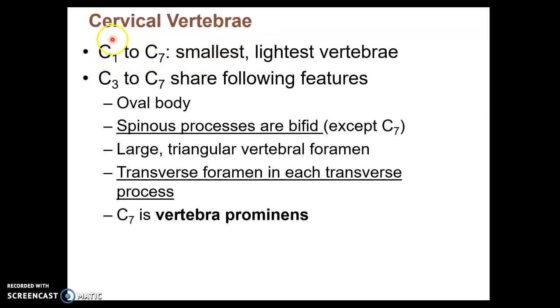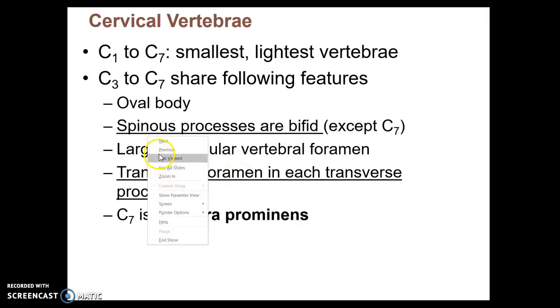Cervical vertebrae run from C1 to C7. The spinous processes are bifid — we'll see that in a minute — and there are transverse foramina, which we'll see on the next slide.